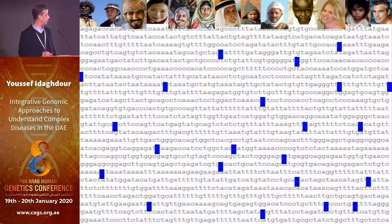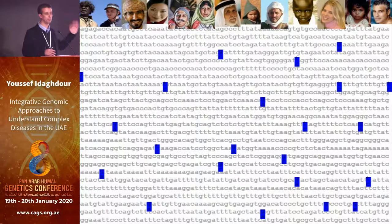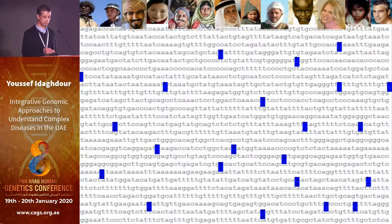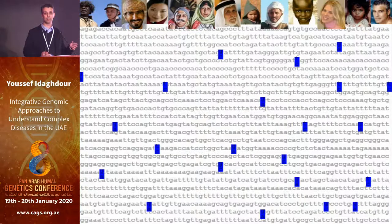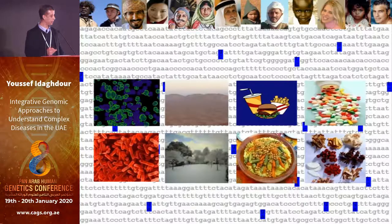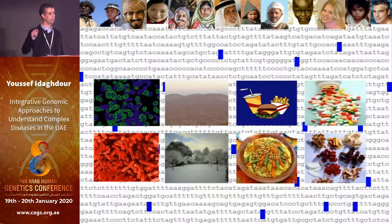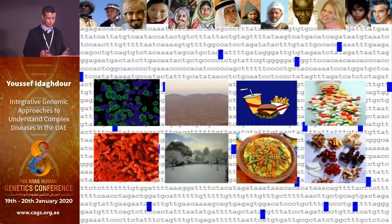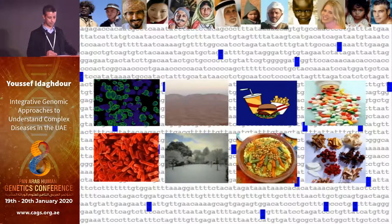I'm a geneticist by training. If we look at differences between individuals, you will see polymorphisms between individuals, between populations living in different environments. But as you've seen in the morning session, something very important when it comes to complex traits and complex diseases is the environment. I was counting how many times the environment was mentioned — it was mentioned 15 times this morning.